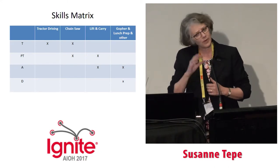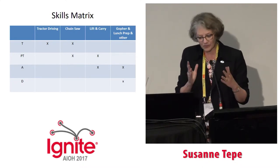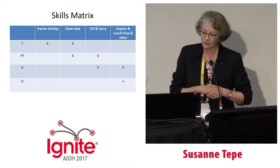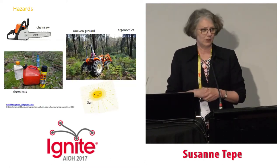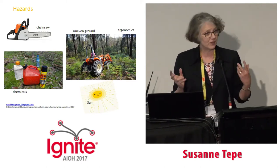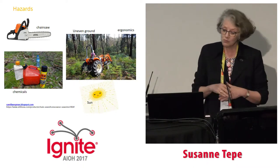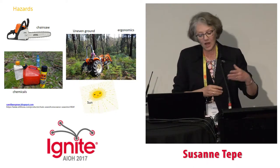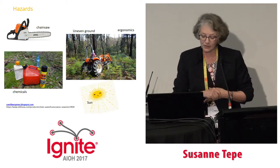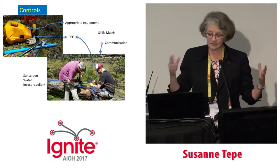We did a skills matrix — perhaps not written down — but what we decided was that there was one person who could drive the tractor, two who could use the chainsaw, two who were good at lifting and carrying, and one who was good at running for things — called a gopher — and ran for lunch. The hazards? We obviously had a chainsaw, a tractor, some chemicals in particularly well-labeled containers, and it was outside so we had the sun.